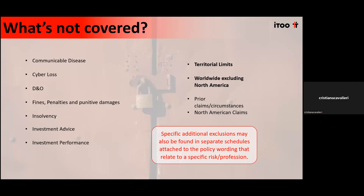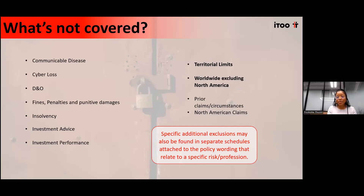Karen asks about indirect costs of coverage. The indirect costs would be the consequential losses. For example, an engineer designs a structure, it's constructed, they're supervising and monitoring, and something happens on site that causes a loss to someone other than the direct third party the insured contracted with - that would be regarded as an indirect or consequential loss. It's still caused by the direct loss but it's affecting someone else. That is what we classify as indirect losses.